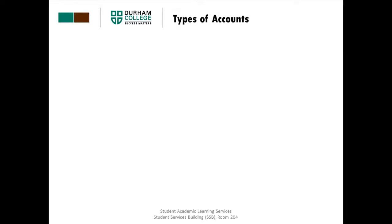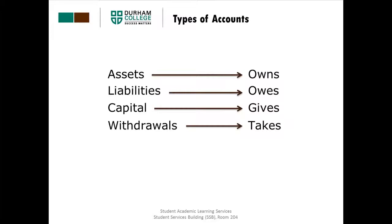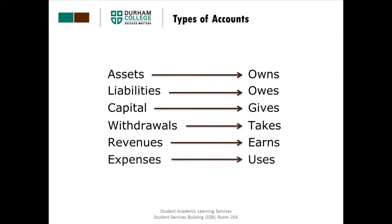It is often helpful to describe account types that make up the accounting equation in simpler everyday terms, as this will help you analyze a financial event and choose the appropriate named accounts needed to record that event. Assets can be thought of as things the company owns. Liabilities are things that the company owes. Capital represents what the owner gives to the company. Withdrawals represent what the owner takes from the company. Revenues are what the company earns by doing work, and expenses are what the company uses when doing that work.